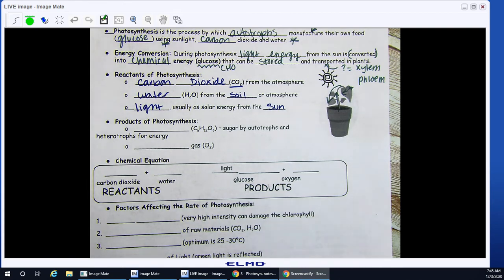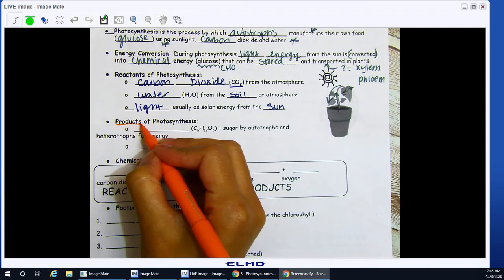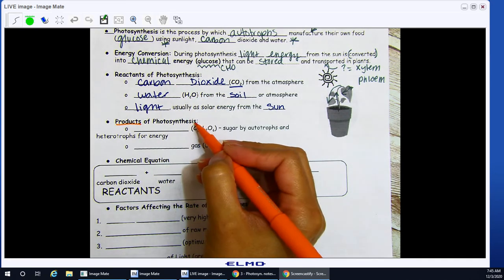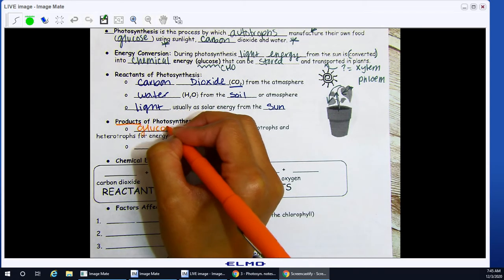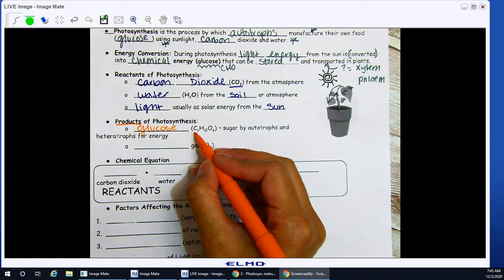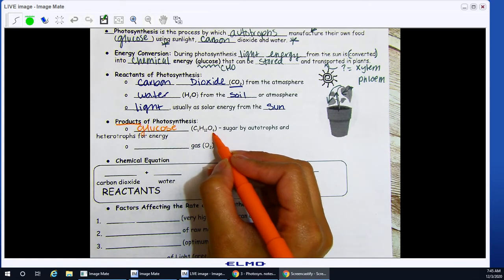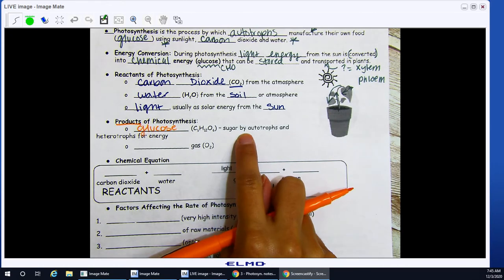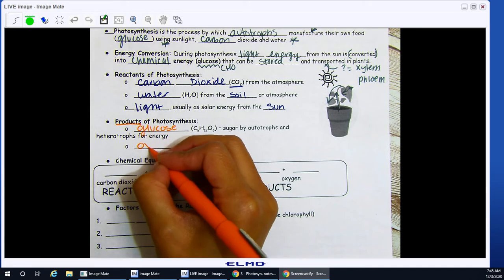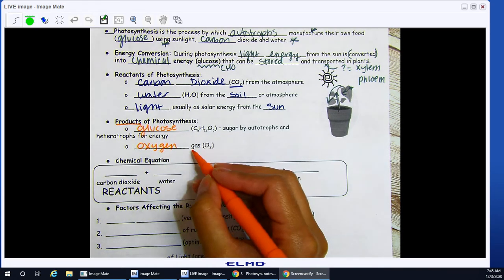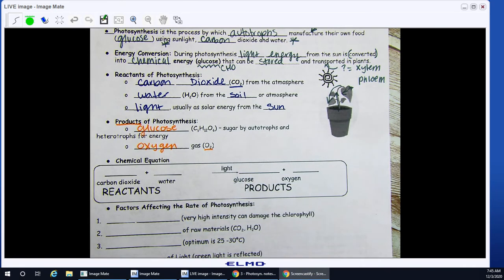Once I'm able to perform photosynthesis, I now have products. Products is what I get out of it. So once I do photosynthesis, what are my products? What do I get out of it? Well, for starters, I'm going to get glucose. As we had mentioned, glucose is sugar. The chemical formula for glucose is C6H12O6. And this is noted as sugar by autotrophs and heterotrophs for energy. Next, I'm going to get oxygen. This is a gas, O2. This is actually a waste product of photosynthesis. But you guys know that that's definitely not waste for us. We need that.